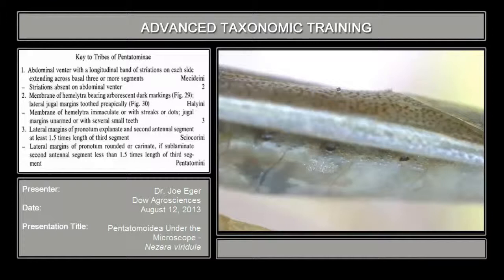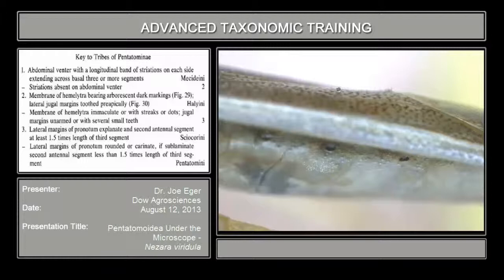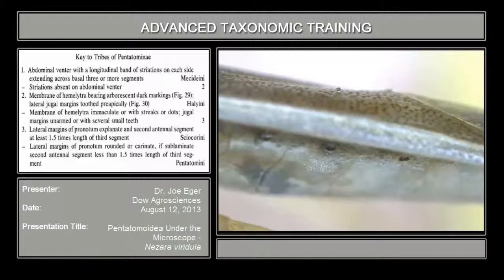Now in the same paper we go to the key to tribes of Pentatominae on page 202. The tribes have changed quite a bit since this paper — there are a lot more tribes now, and higher classification has shifted. But if you're using Ralston's keys, you'll just use these tribes. Schizocorinae, Hyalinae, and Mecideinae are all still valid tribes, but the Pentatominae have been broken up into a lot of other tribes.